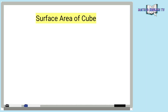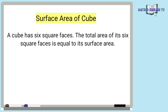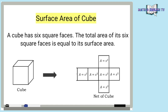Next, surface area of cube. A cube has 6 square faces. The total area of its 6 square faces is equal to its surface area. Ang cube ay mayroong 6 na faces, at ang total area ng 6 square faces na ito ay ang kanyang surface area. Nasa kanan, ang net of cube — ito yung makikita natin kapag yung cube ay tinanggal natin sa pagkakabuo at i-flatten natin. Merong 6 na square at kukunin ang area ng bawat square. Yung formula sa pagkuha ng area ng square ay area equals side squared, o area equals side times side. Kapag nakuha na yung area ng bawat square, ipa-plus lamang yan ng 6, at ang total ay ang surface area ng cube.